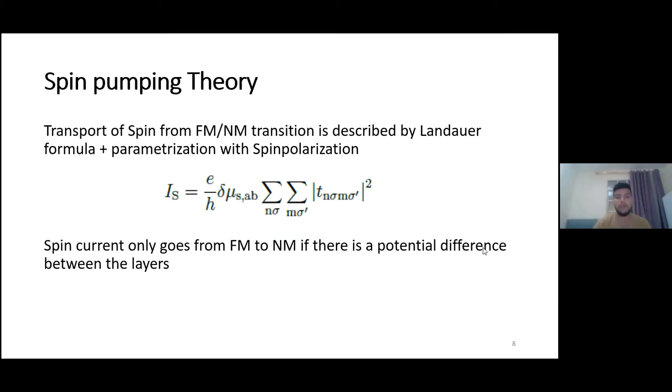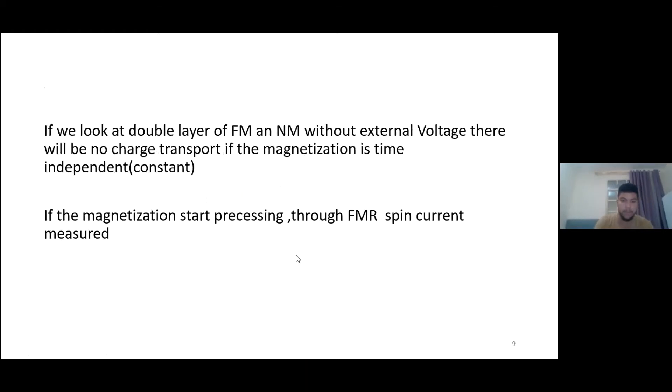And the spin pumping is based on the Landauer formula. But we parameterized the spin polarization as well. And important is the transmission coefficients. We have a transmission from the scattering channel from M to N and from the sigma dot to sigma state. So that means that we only have a current from the ferromagnetic layer to a normal magnetic layer in the beginning, if we have a potential difference, of course. Otherwise, we don't have a current. The scattering matrix is also parameterized in components of the magnetization.